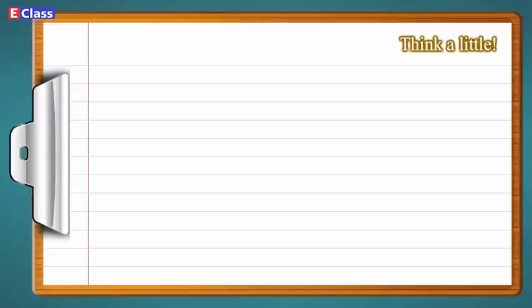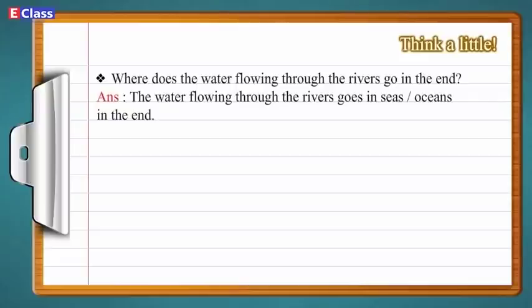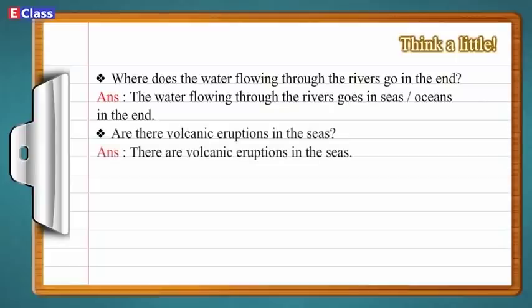Think a little. Where does the water flowing through the rivers go in the end? The water flowing through the rivers goes into the seas or oceans in the end. Are there volcanic eruptions in the seas? Yes, there are volcanic eruptions in the seas.